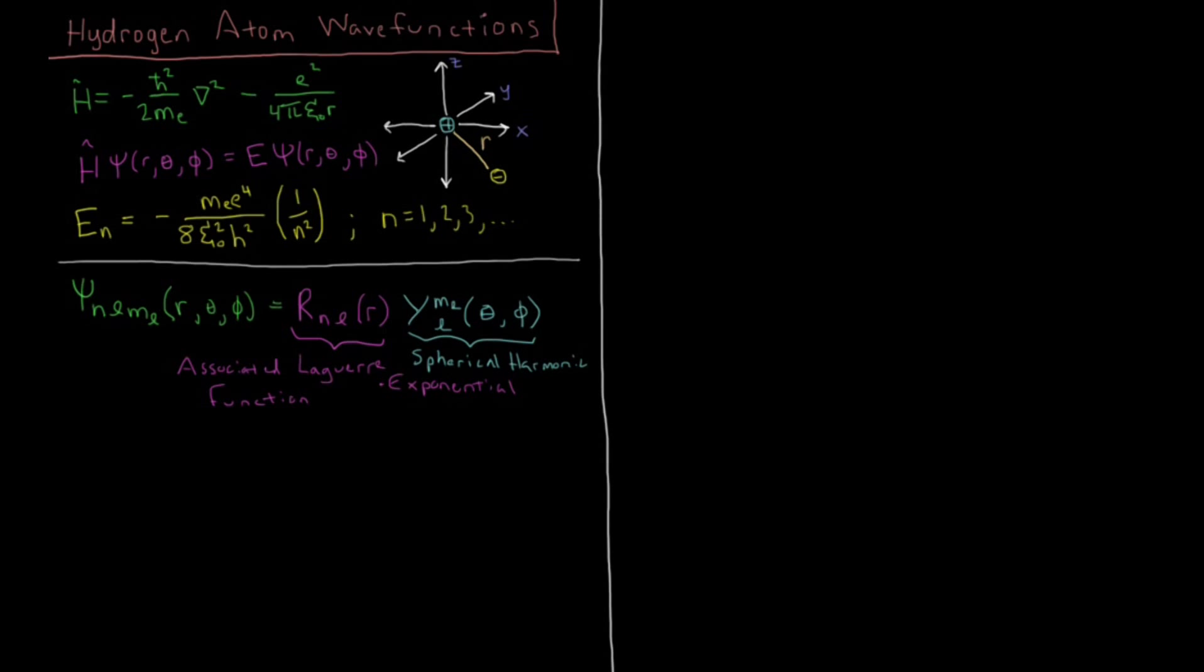And these quantum numbers, what values can those take on? Well, for n, l, and m sub l, all possible values of those are all integers. And then the types of values they can take on is n is going to be greater than or equal to 1. So the minimum value for n is 1. For l, l can be anywhere between 0 and n minus 1. So for n equals 3, l can be 0, 1, or 2. For n equals 4, l can be 0, 1, 2, 3, etc.